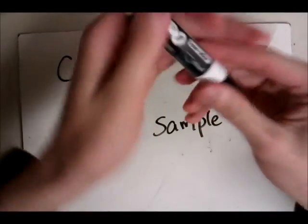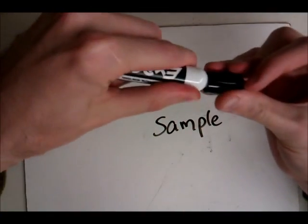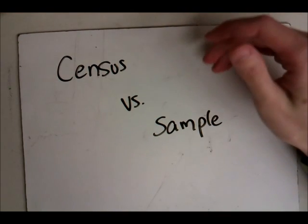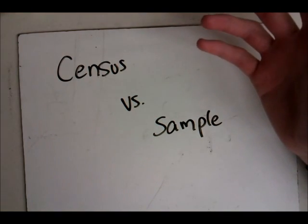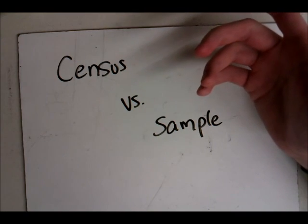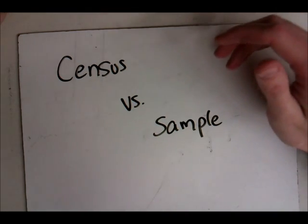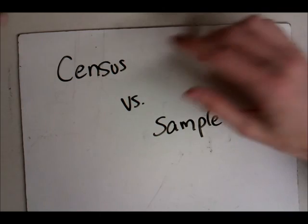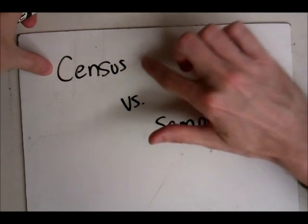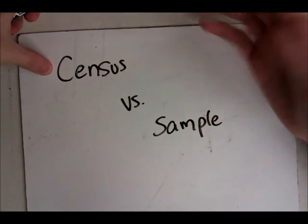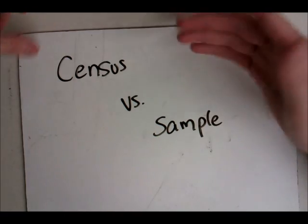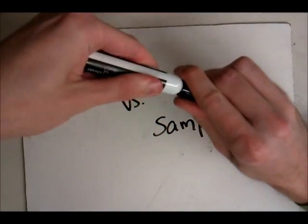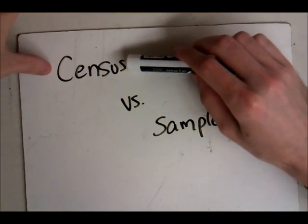When you're doing surveys, you could theoretically send it to everyone in your population. For example, if I wanted to find the height of people in my school, I could take a census. I would go around and ask every single person in the school how tall are you, or I would probably actually measure them so they can't lie about it. So that's a census.